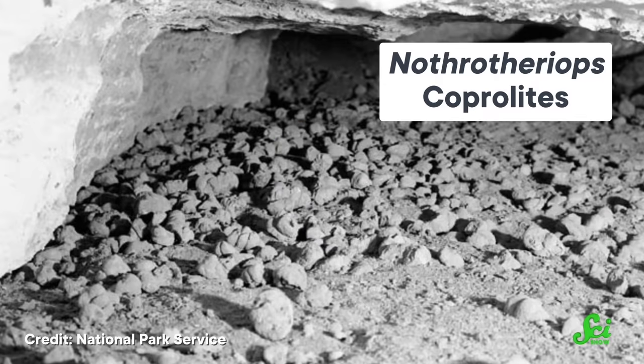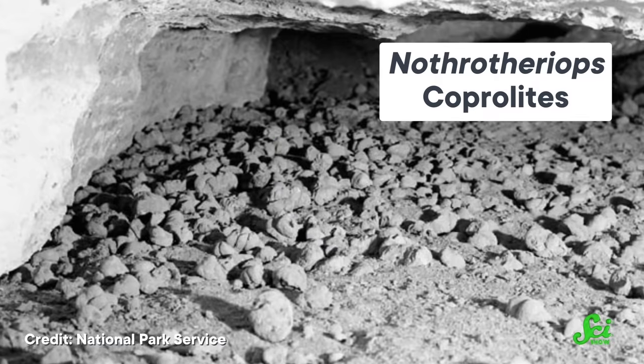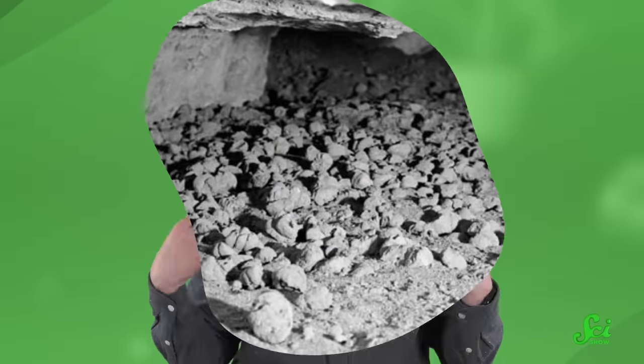Now, coprolites left by a smaller sloth species from a cave in Cuciu cura Argentina found remnants of mostly grasses and sedges. Other sloth poop samples found that those megasloths ate grasses and shrubs, like those from the same family as carrots and parsley. And Northrotheriops dung turned up fragments of yucca and agave plants. In all these studies, there wasn't even a trace of DNA from laurel plants, the family that avocados are part of.